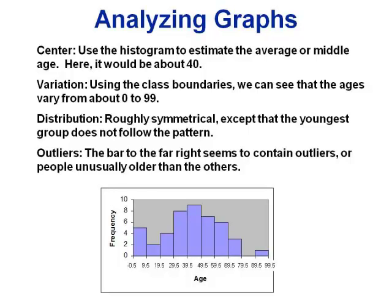Distribution means thinking back to those shapes: this histogram is roughly symmetrical — not perfect because of one bar on the left that's a little higher than it should be, but close enough that we'd say approximately symmetrical. For outliers, be careful — we're not looking for a bar that's unusually tall or short. We're looking left to right for a group that's far away from all the others. Looking at the far right, there's a gap before the last bar, which makes me think that bar could represent outliers. We'll talk in Chapter 3 about how to calculate whether those are actually statistical outliers.